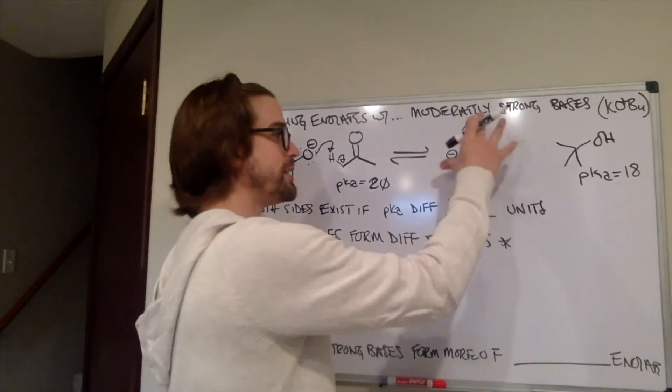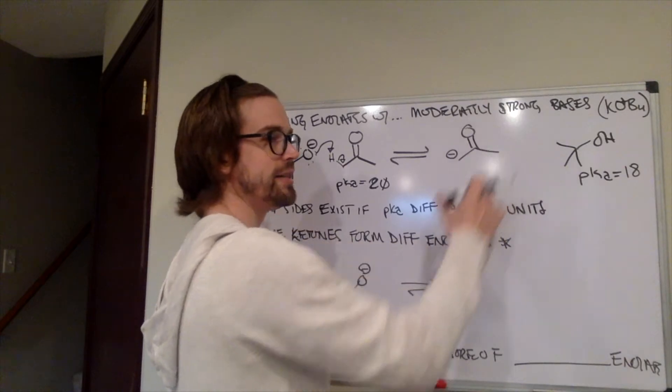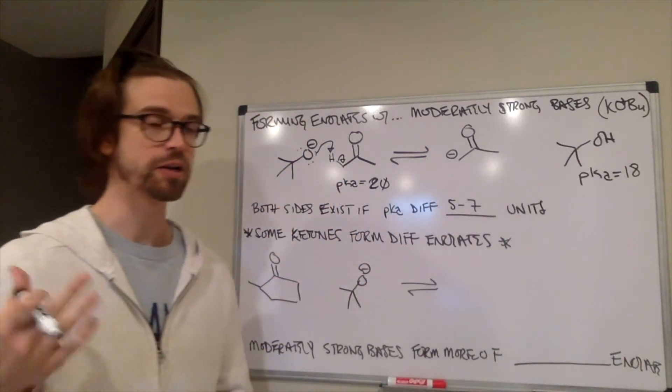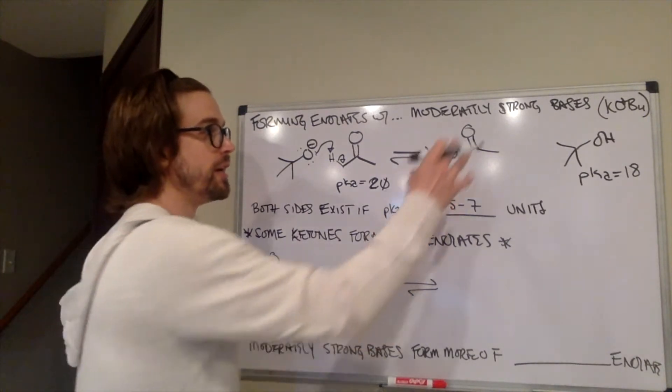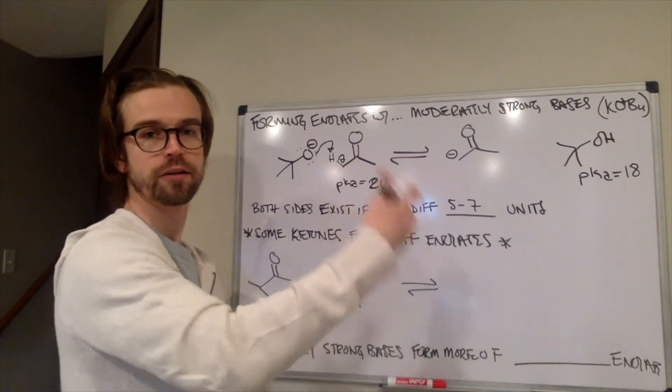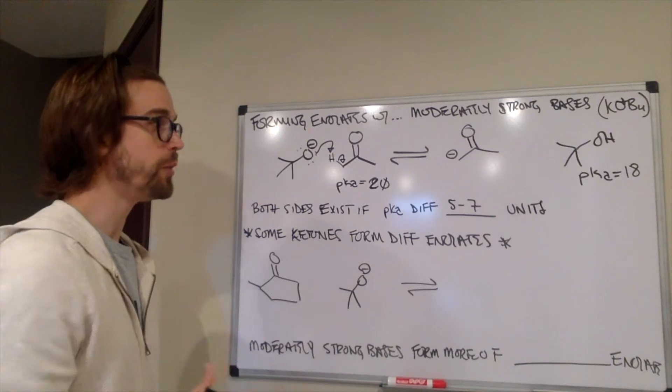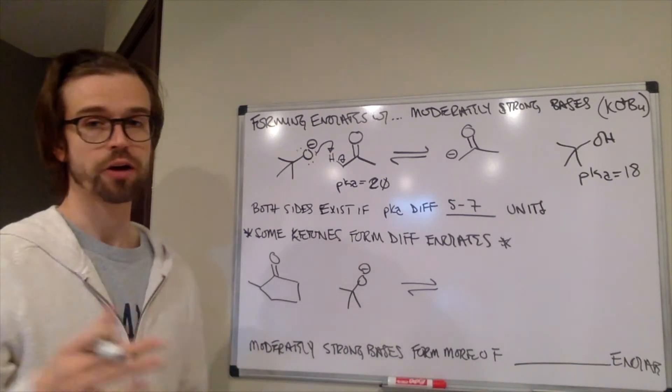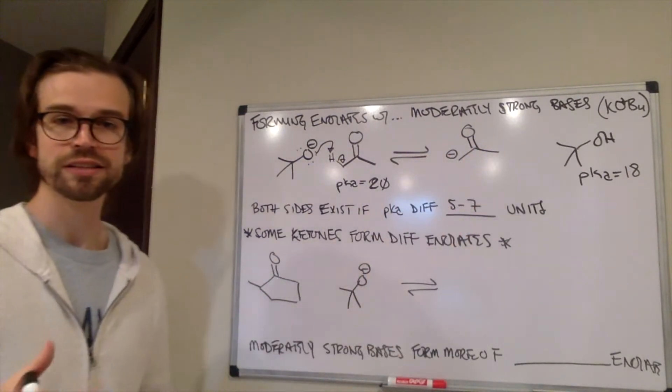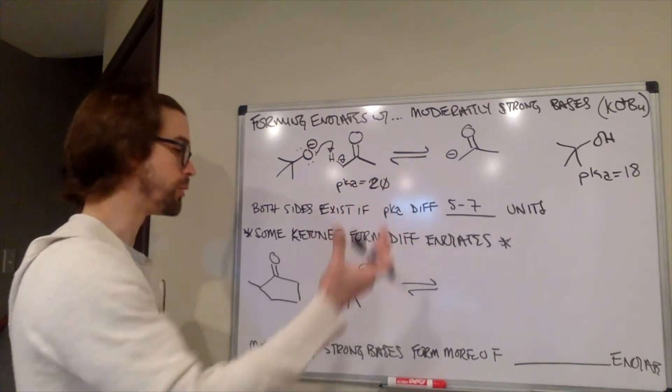And if this is the reactive species on this side, and even if it's only 1%, that 1% is going to react. And just like Le Chatelier, like we've talked about a bunch of times, if this reacts, then the equilibrium is going to be forced forward, and a little bit, a little bit, a little bit will react until all of it's reacted. So, we can form enolates with these moderately strong bases where just a little bit's being formed, and that will still allow us to use them as nucleophiles.